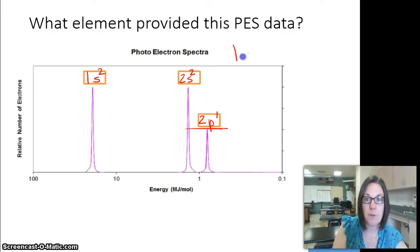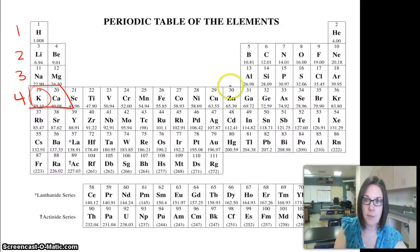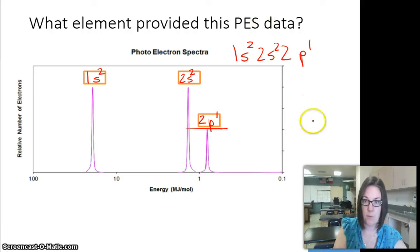So the element with the electron configuration 1S2, 2S2, 2P1, if we go to our periodic table, would be boron. Because here's our 1S2, 2S2, here's P1. So this one would be boron.